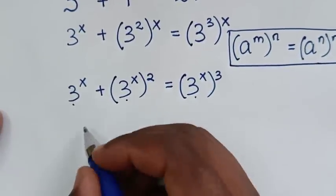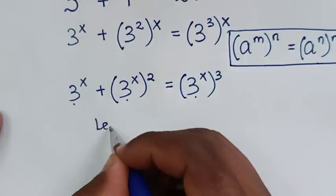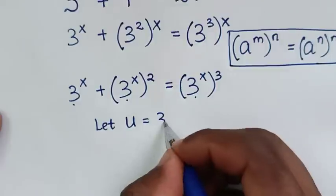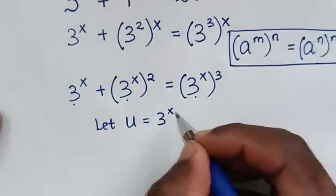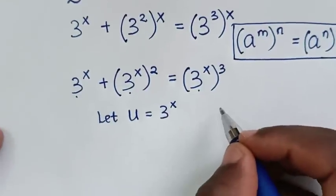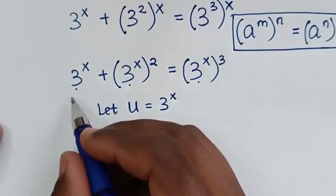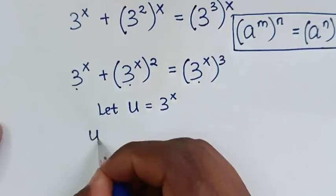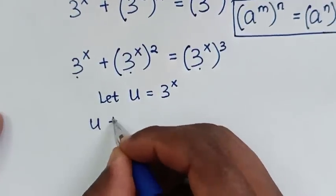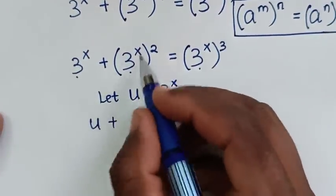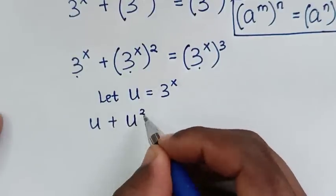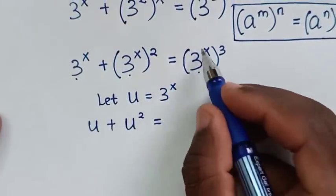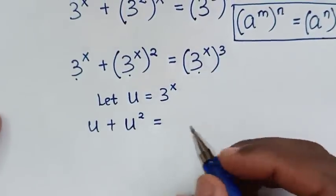Since 3^x is common throughout, we let u equal 3^x. Substituting, the equation becomes u plus u² is equal to u³.